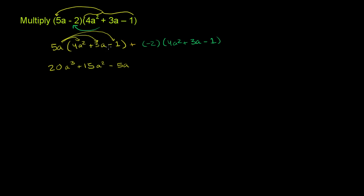Now we handle the second part. Negative 2 times 4a squared: negative 2 times 4 is negative 8a squared. Then negative 2 times 3a: negative 2 times 3 is negative 6a. And finally, negative 2 times negative 1 — a negative times a negative is a positive — so that is positive 2.